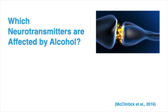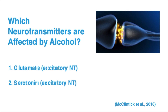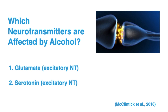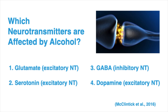So which neurotransmitters are affected by alcohol? Alcohol interferes with glutamate, serotonin, GABA, and dopamine. Ethanol molecules specifically interfere with their ability to bind to receptors within different regions of the brain. This leads to lower rates of communication between brain cells, ultimately causing signs of drunkenness.